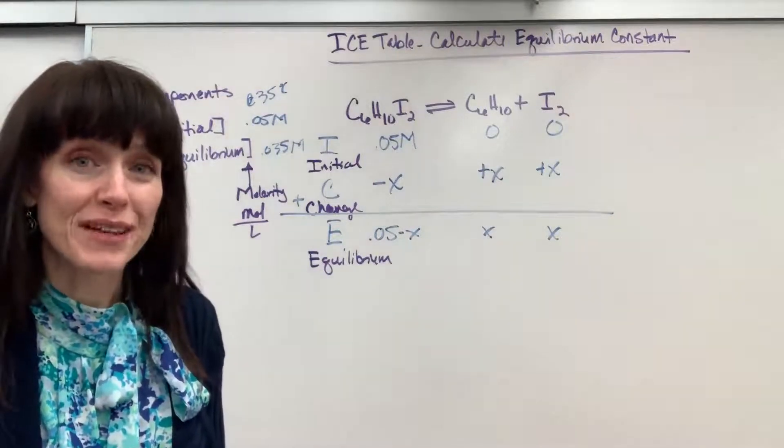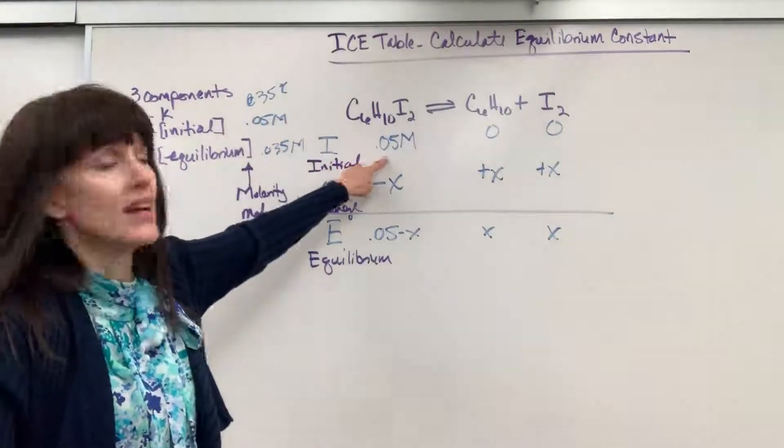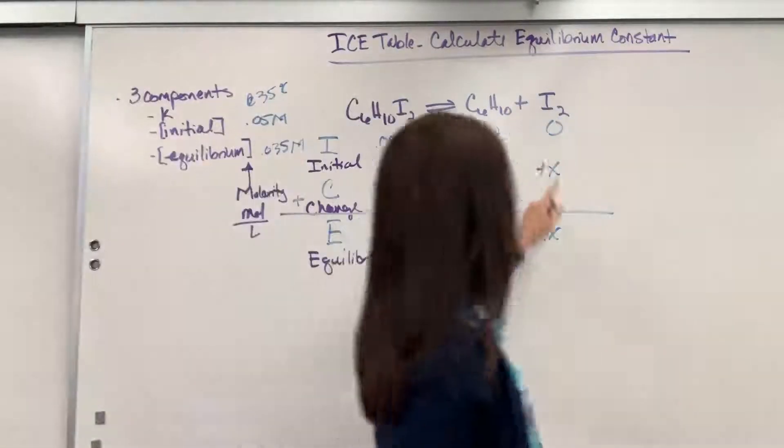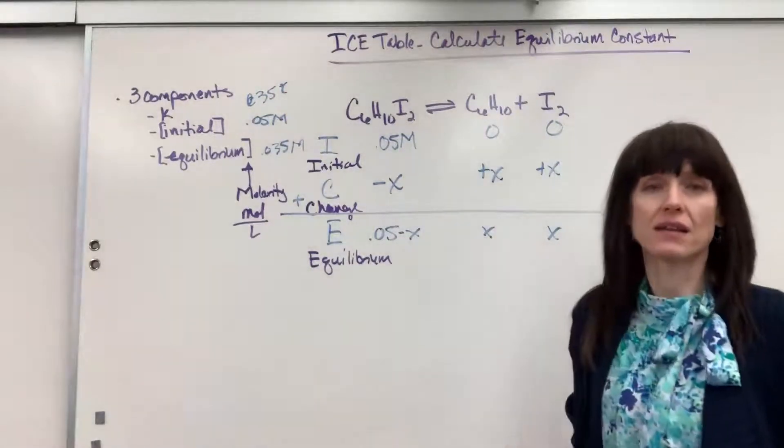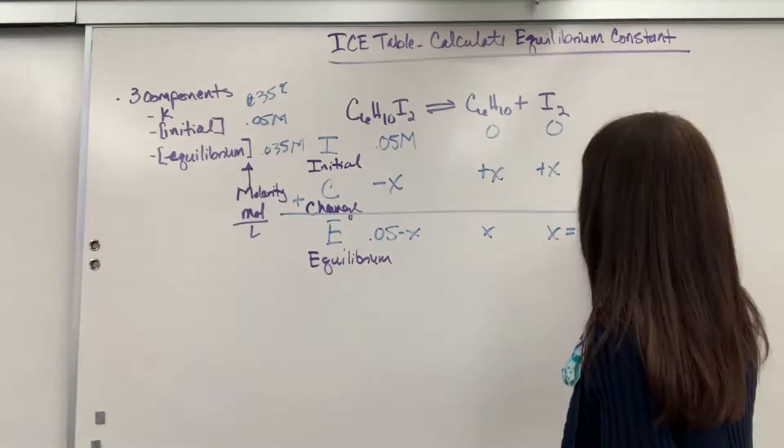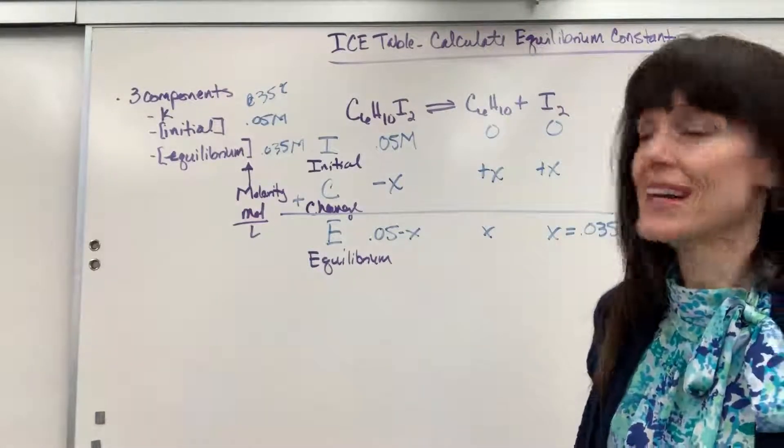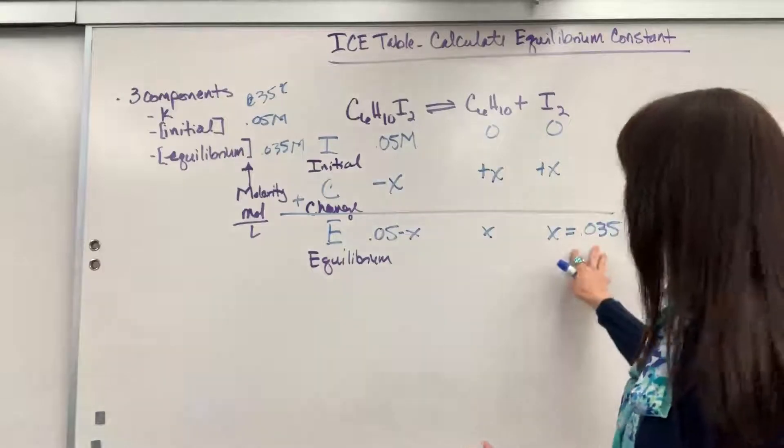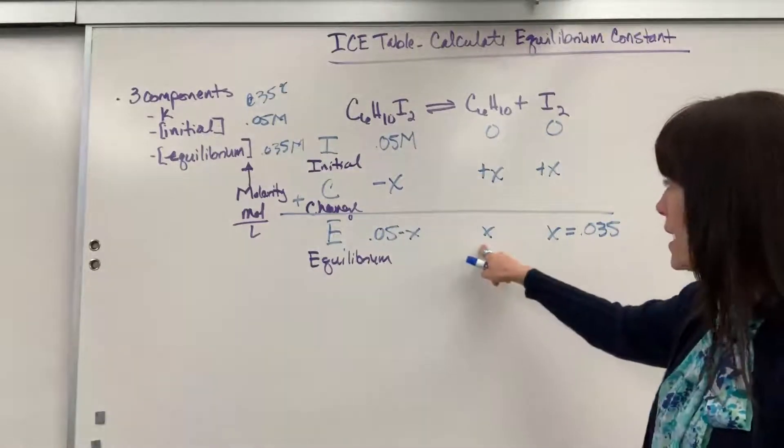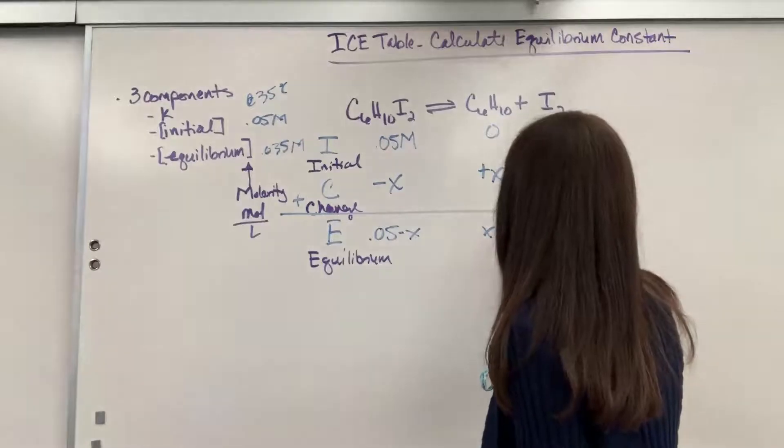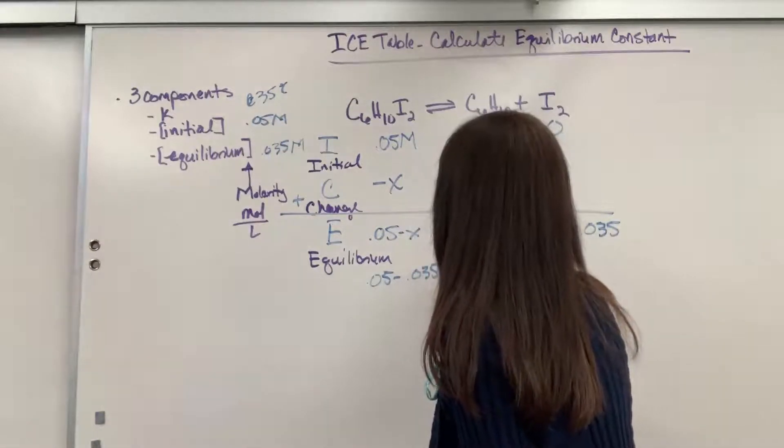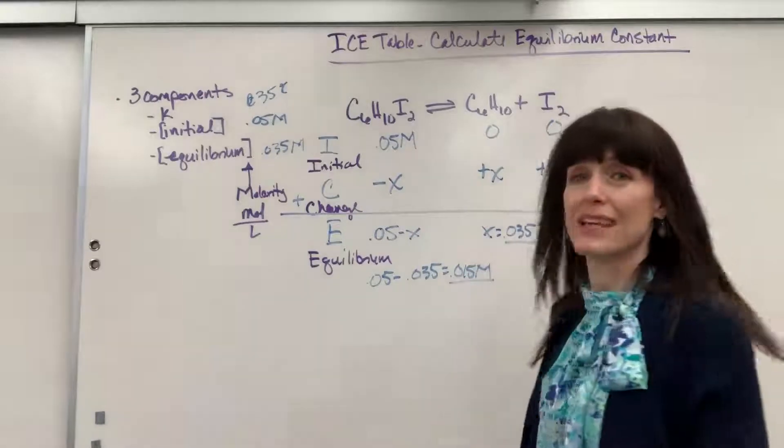Now you might recall they gave us another piece of information. They had given us the initial concentration and they gave us the equilibrium concentration for iodine. I have determined that the equilibrium concentration of iodine is X. Well, they told me equilibrium concentration is 0.035. Therefore, X equals 0.035. That's slick. So in a very sly way, they gave us a piece of the ice table. They gave us the equilibrium. So that's our X. So I can go ahead and plug in X for all of these. This will be 0.035. Let's go ahead and solve for this one. It'll be 0.05 minus 0.035 equals 0.015 molar.